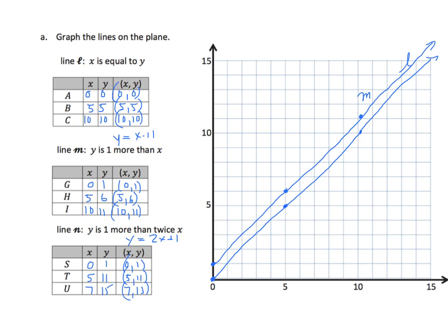So, I have zero and one. Same point as the starting point of M here. And then I have five and eleven. And I have seven and fifteen. And if we plot these, we will see that we again have a straight line.